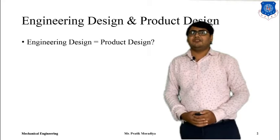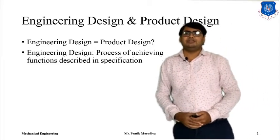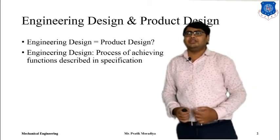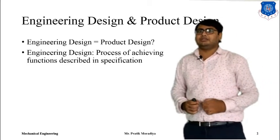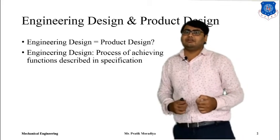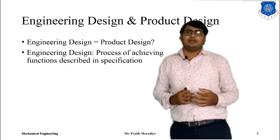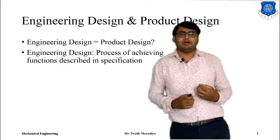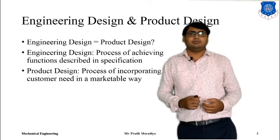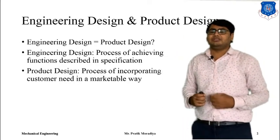There is a difference between them. When we talk about engineering design, it is the process of achieving a function described in a specification. That means when we talk about engineering design, we only talk about getting the work done from a device — the specification, the requirement, and some mechanism or functions that perform to get an output. But when we talk about product design, it is the process of incorporating customer needs in a marketable way.